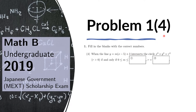Problem 4 of 1. When the line y equals m(x minus 5) plus 3 intersects the circle x squared plus y squared equals r squared, where r is a positive number, if and only if 0 is less than or equal to m is less than or equal to blank, then r equals blank.